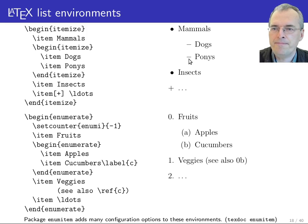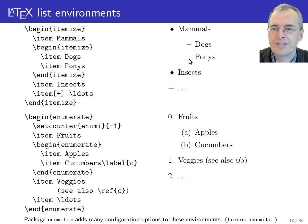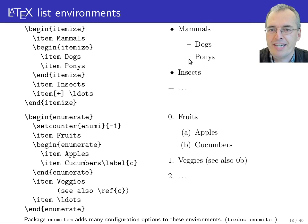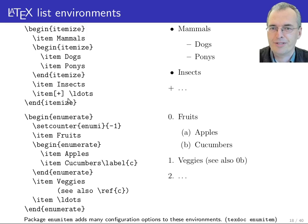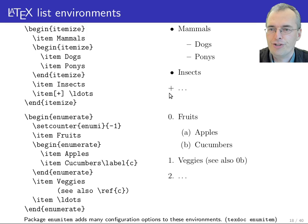Sometimes you may want to override the default bullet. For example, if you have a list of advantages and disadvantages and want a plus sign and a minus sign respectively, you can provide an optional argument to item in order to individually pick your own bullet.